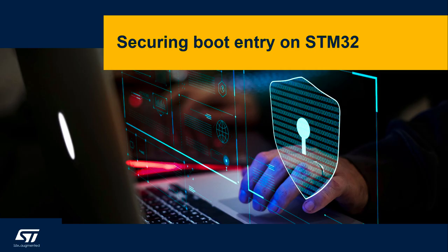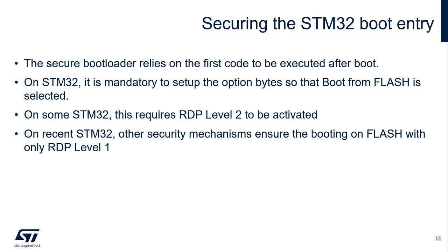Next we will see how to secure the boot entry on STM32. The secure bootloader relies on being the first code executed after boot. On STM32, it is mandatory to set up the option byte so that boot from flash is selected. On some STM32 families, this requires RDP level 2 to be activated. On more recent STM32 series, some other security mechanisms can also ensure booting from internal user flash with only RDP level 1.